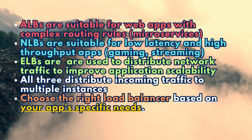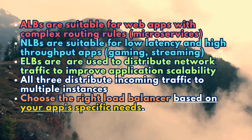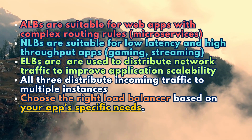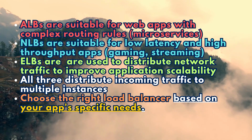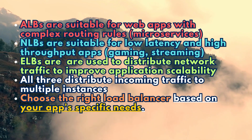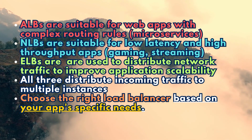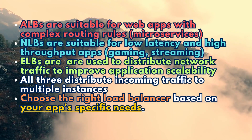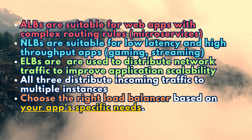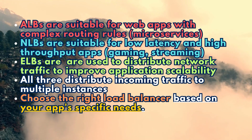In conclusion, AWS offers three different types of load balancers: the Application Load Balancer (ALB), the Network Load Balancer (NLB), and the Classic Load Balancer (ELB). While all three load balancers are designed to distribute incoming traffic to multiple instances, they differ in terms of their capabilities and use cases. ALBs are great for web applications that require complex routing rules, NLBs are great for applications that require low latency and high throughput, and ELBs are still used in some legacy applications.